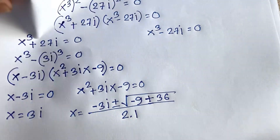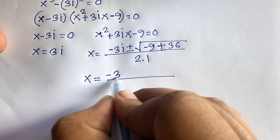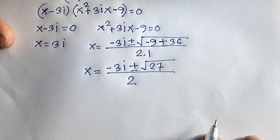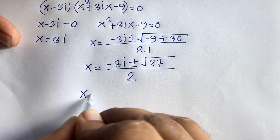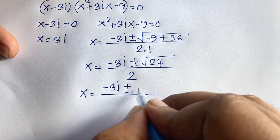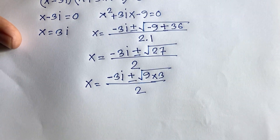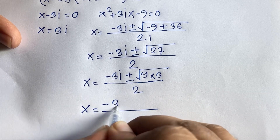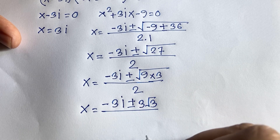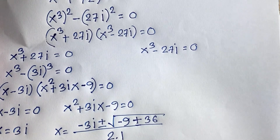So we have x equals minus 3i plus or minus the square root of minus 9 minus minus 36, which is square root of 27, all over 2. Since square root of 27 equals square root of 9 times 3 equals 3 root 3, the answer for Case 1's quadratic is x equals minus 3i plus or minus 3 root 3, all over 2.